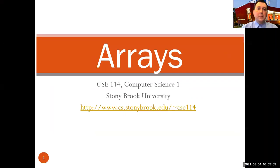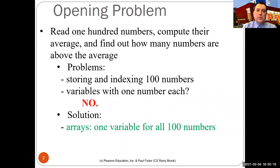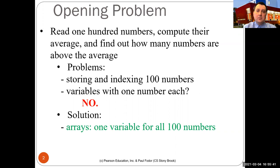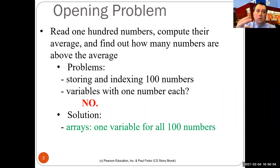Last time we learned how to write methods. Today we'll learn about arrays. An array is the first data structure we study — it's a collection of elements that stay under one single variable. Opening problem: read 100 numbers, compute their average, and find how many numbers are above that average. You really need to remember all the numbers because until you read the last number you can't know the average.